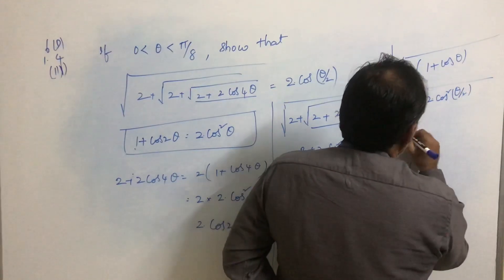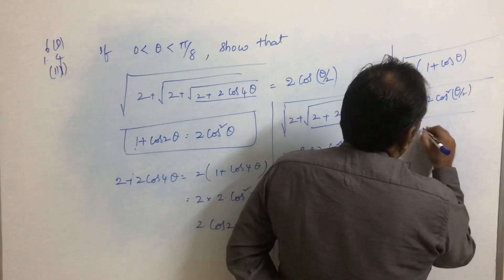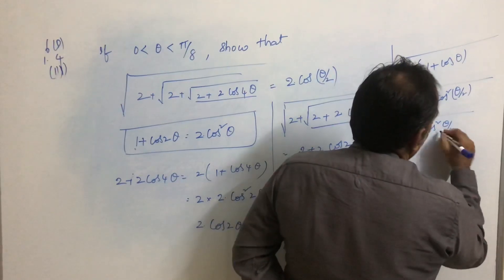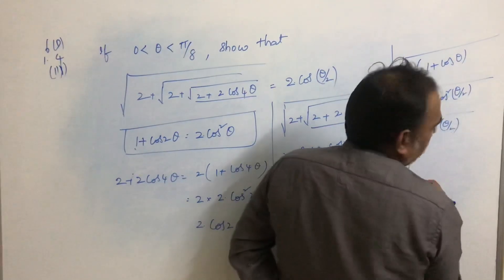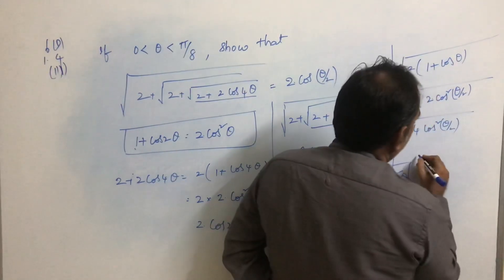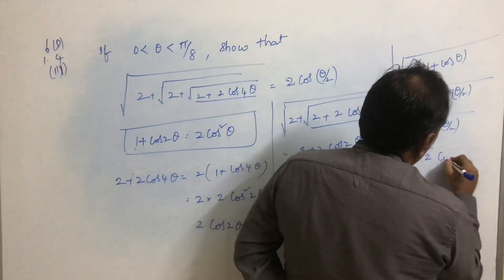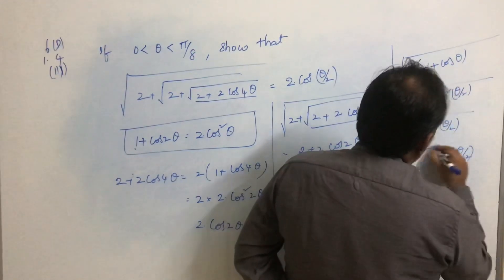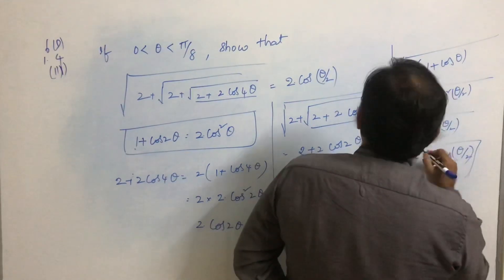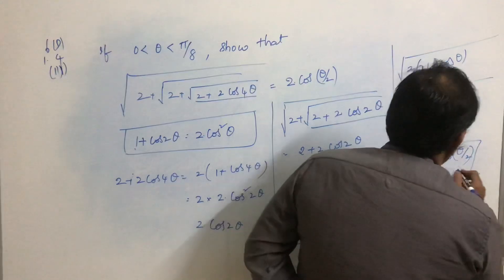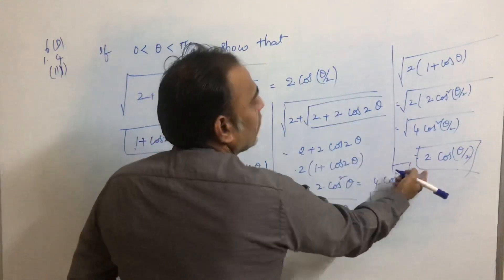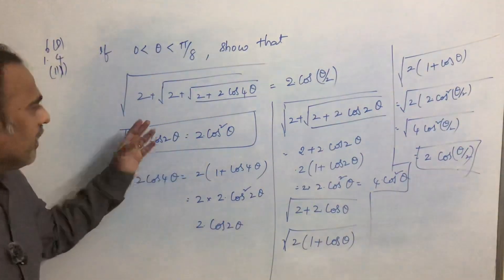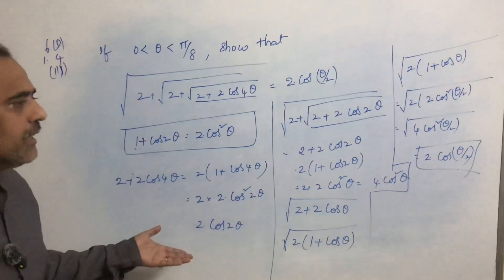Substituting, we get √(2 × 2cos²(θ/2)) = √(4cos²(θ/2)) = 2cos(θ/2). This is the RHS we needed to show. Anyone has questions in this?